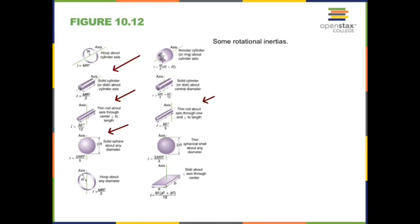There are rotational inertia formulas for particular geometric shapes. You need to know: for a disk, I equals MR squared divided by 2; for a solid sphere, I equals 2/5 MR squared; for a rod, I equals ML squared divided by 12. Remember that rotational inertia depends on the axis of rotation. In all these cases, the axis passes through the center of gravity of the shape.